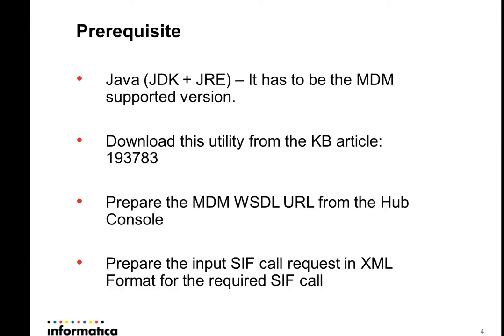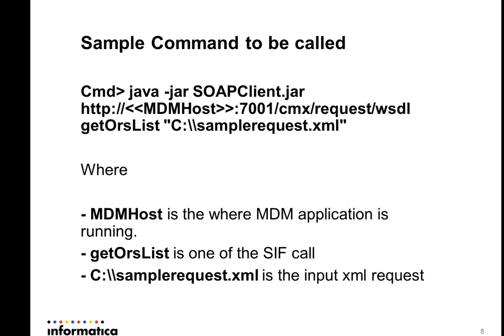You pass the XML request and you will get the response — the request has to be prepared in XML format. Once you download the utility, you can call the command as shown in the screenshot: java -jar SOAPclient.jar, followed by the visual URL, the CIF call name, and the input request XML file. Once you use this command, you will get the output in the command itself.